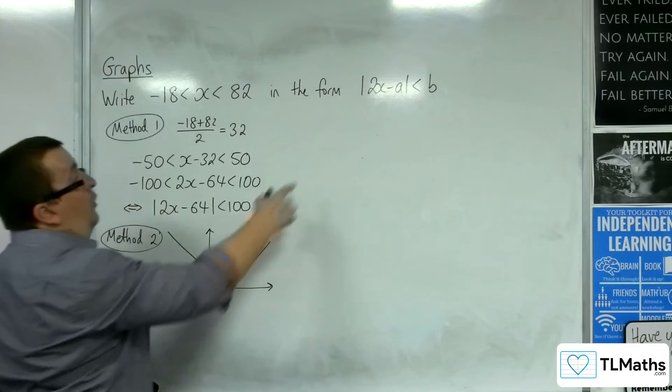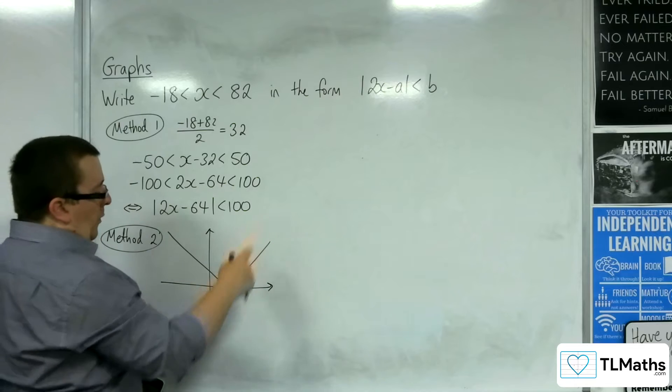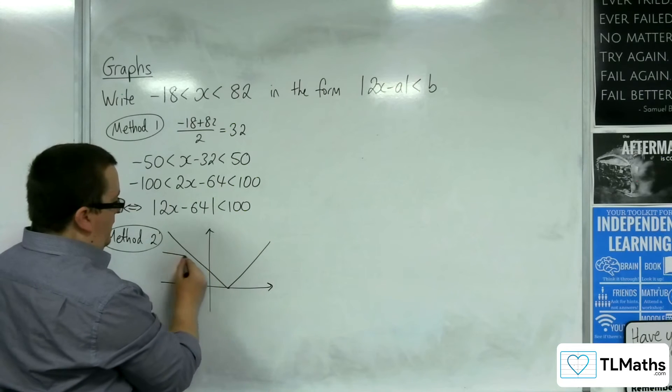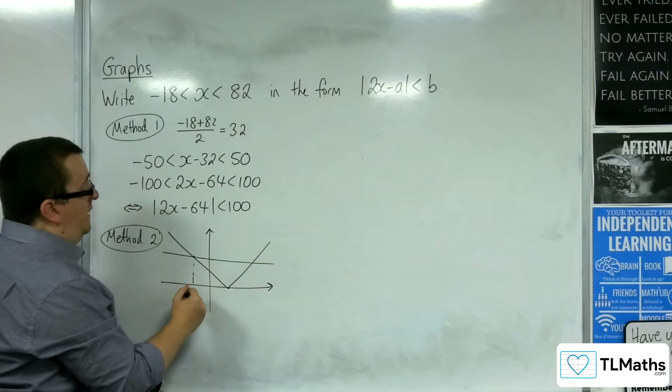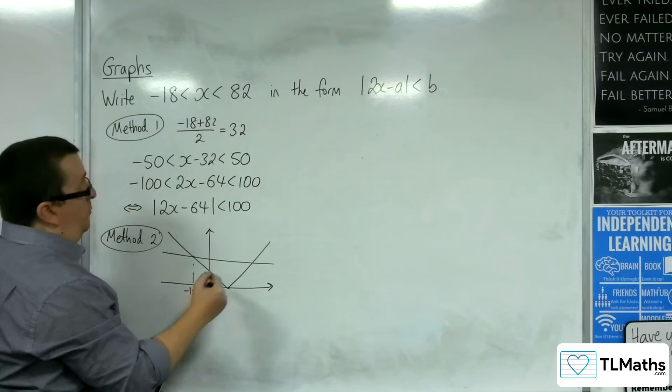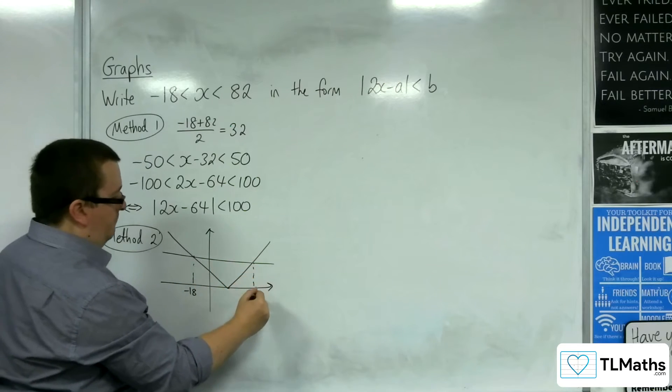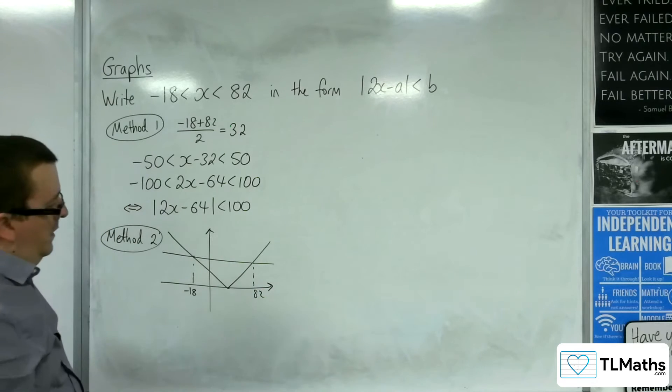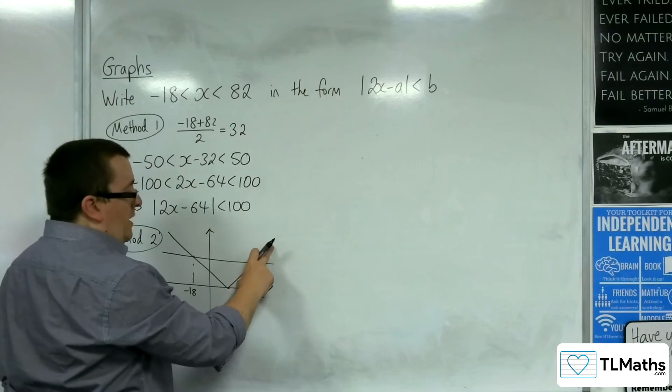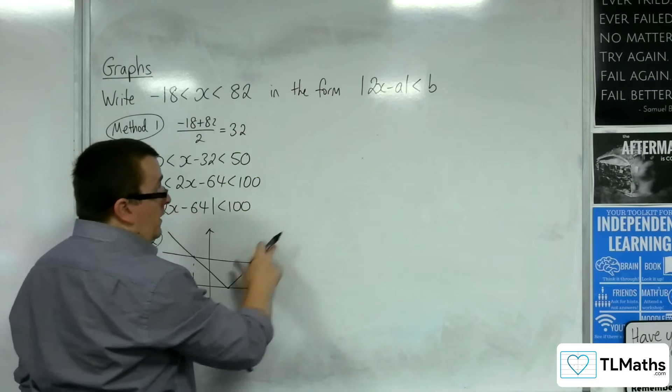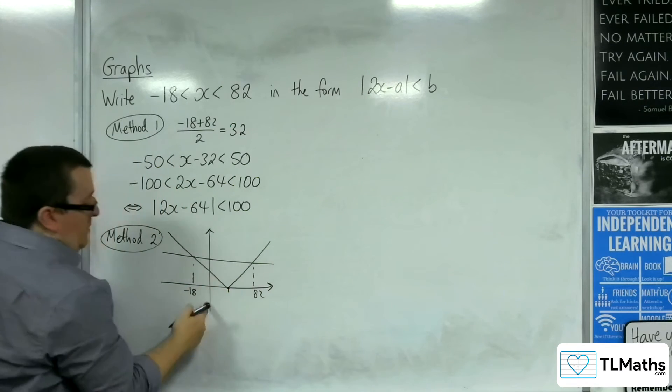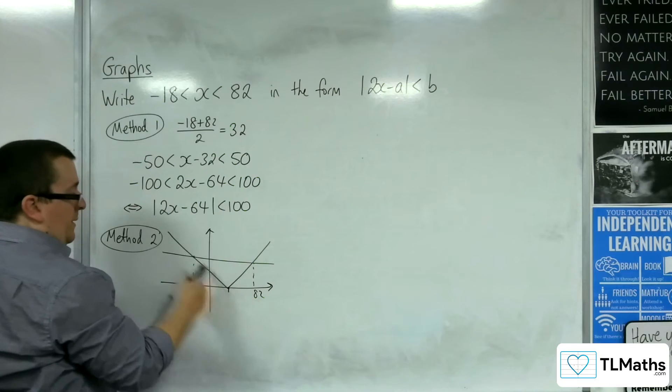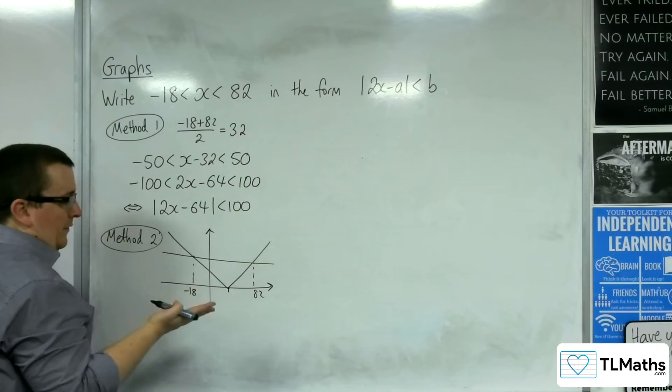Because this is going to be the graph of 2x - a, I know that the vertex is going to be to the right of the y-axis. Because this point is -18 and this point is 82. I know that the gradient of that line is 2 because of that value there.